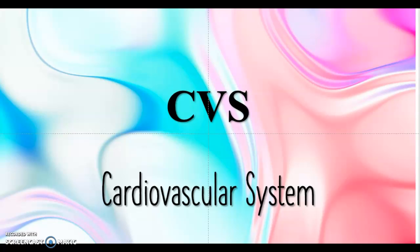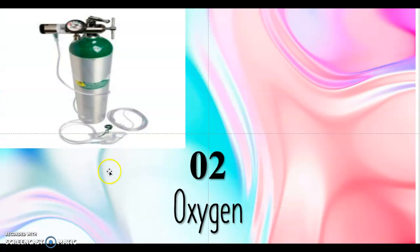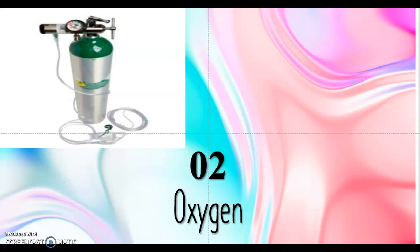CVS stands for cardiovascular system. We know the cardiovascular system consists of the heart and related structures. O2 stands for oxygen. You often see this abbreviation used in long-term care facilities and hospitals.